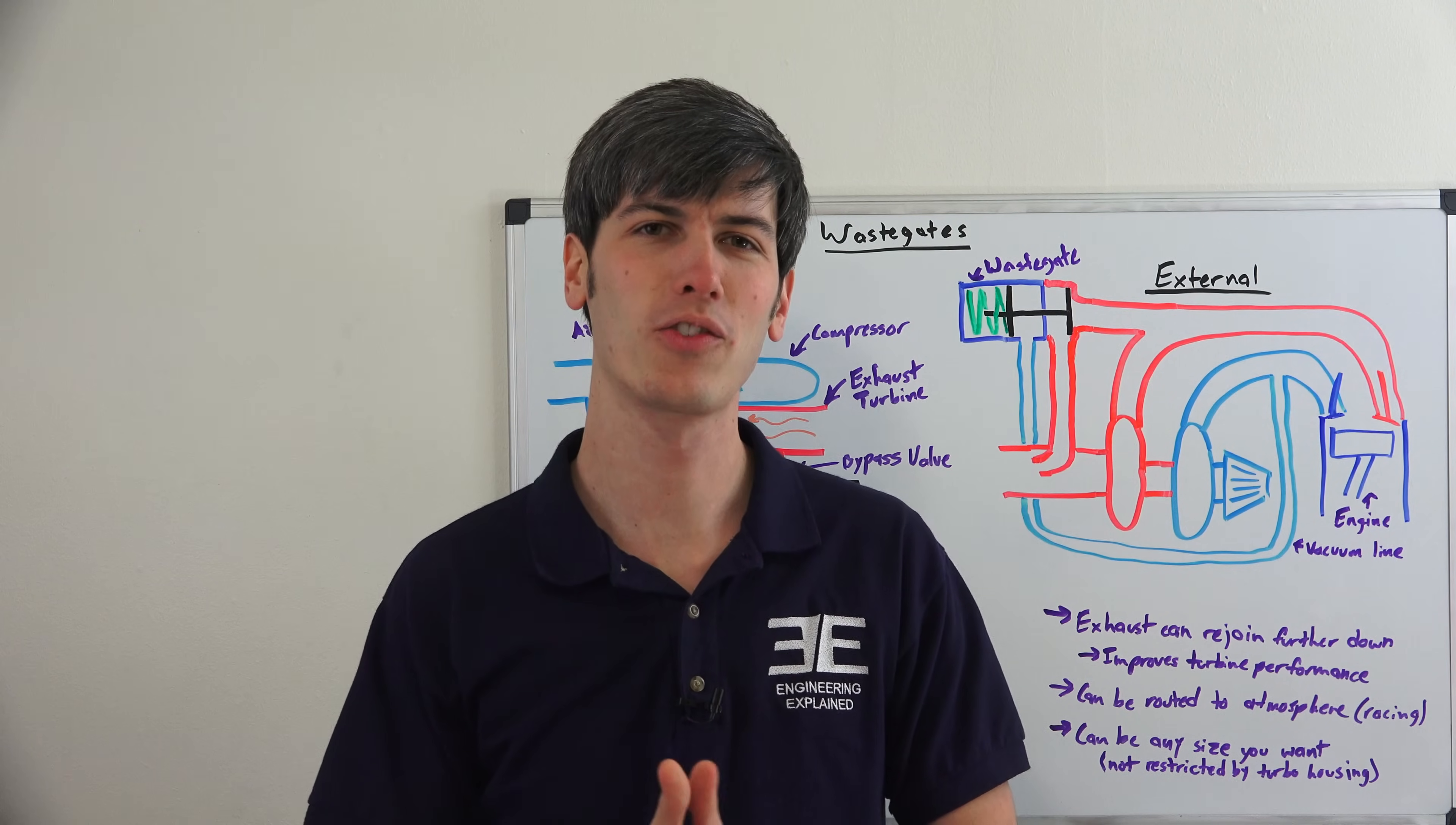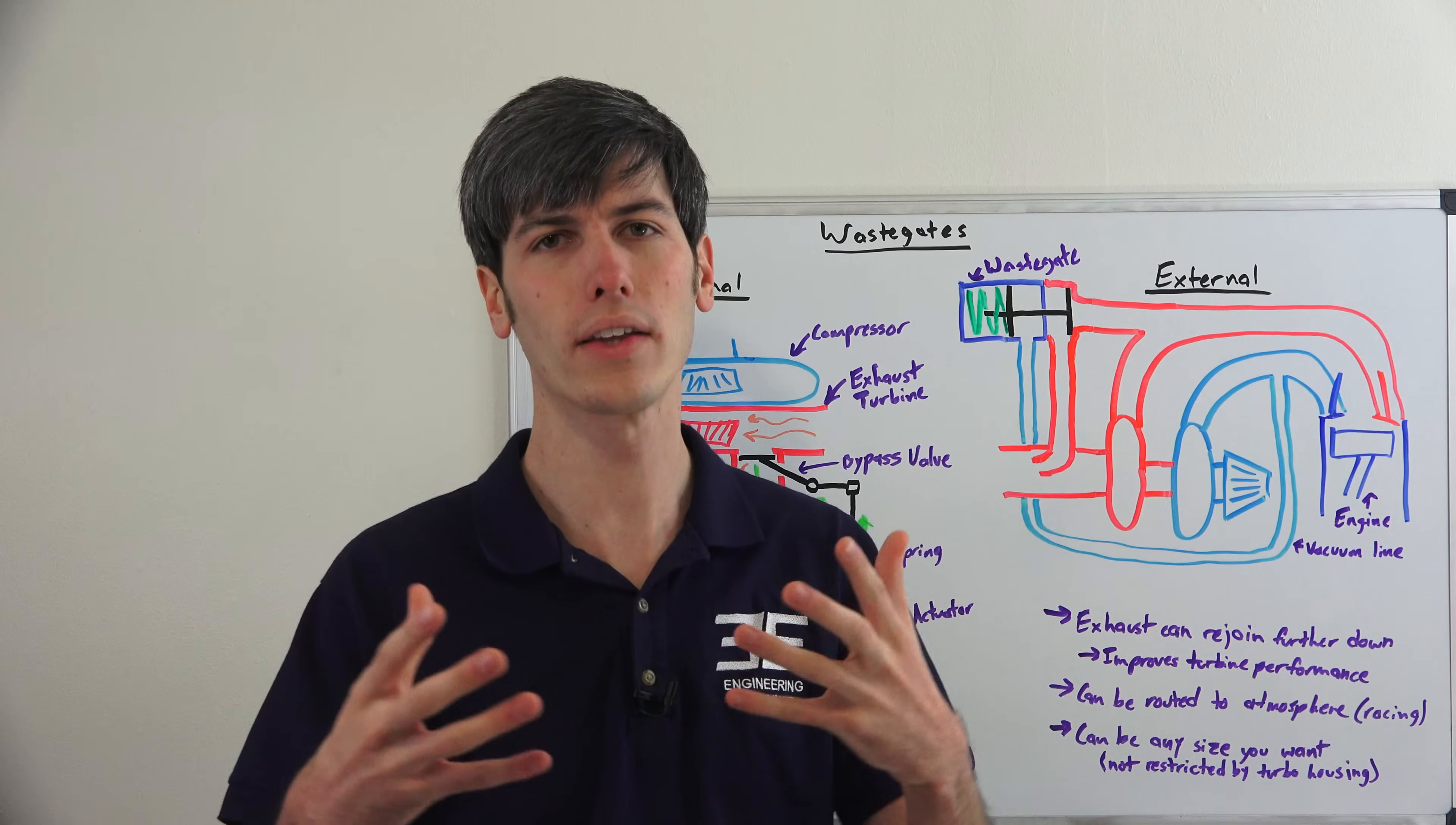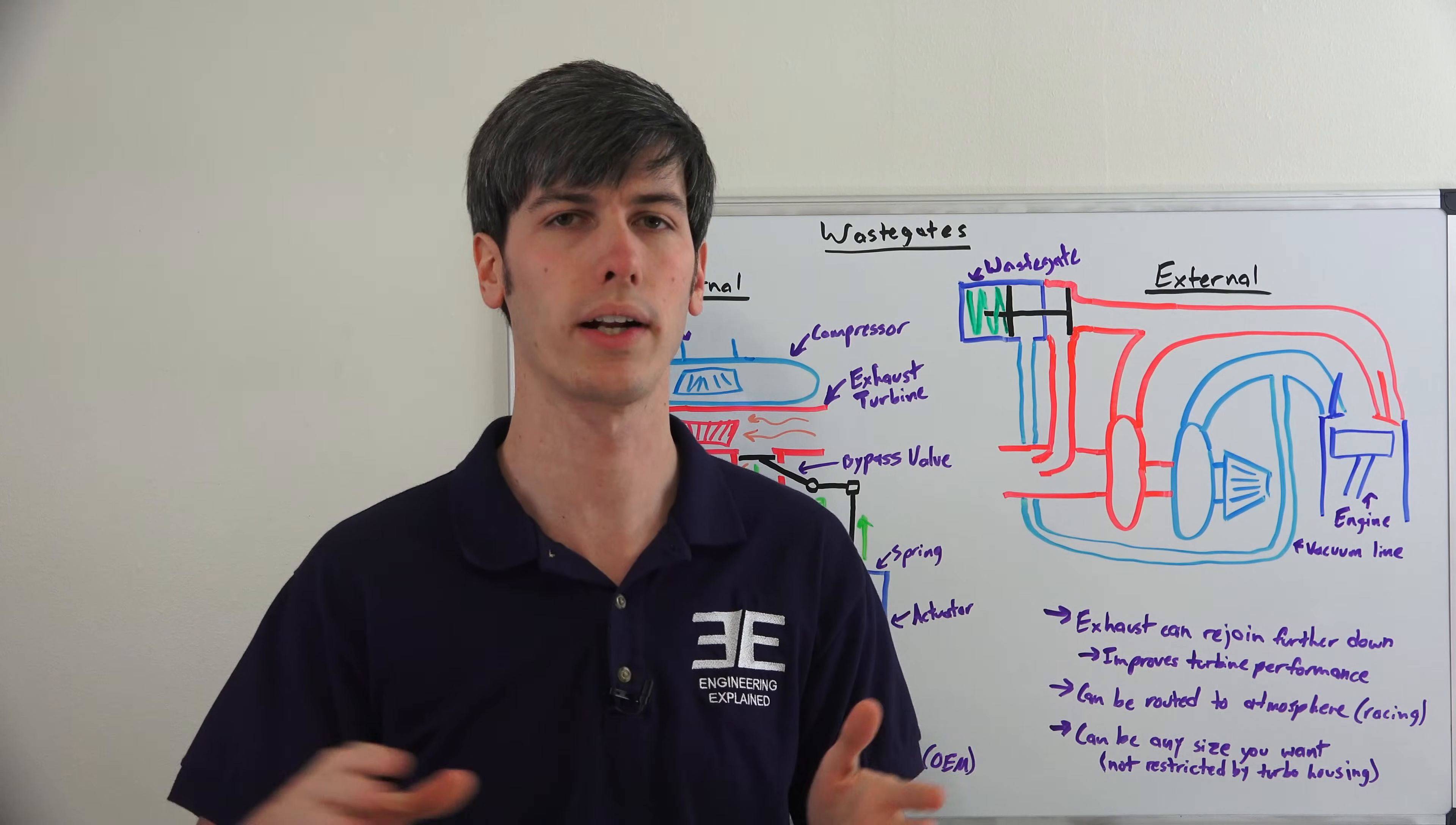Hello everyone and welcome. In this video we're going to be talking about how turbocharger wastegates work and the two methods used. We've got internal and external, and wastegates really are just bypass valves so the exhaust gases can bypass the turbine of the turbocharger and just go straight out of the car.